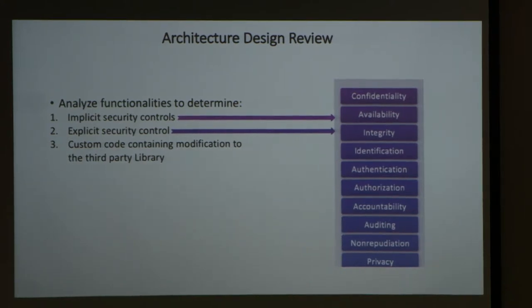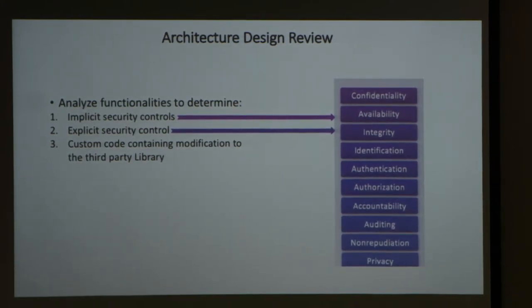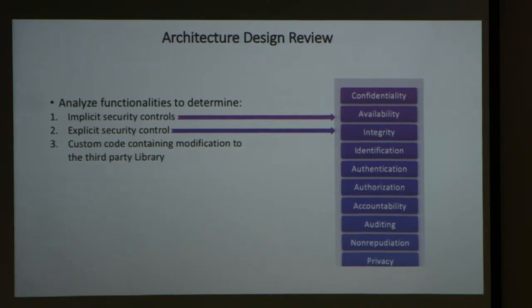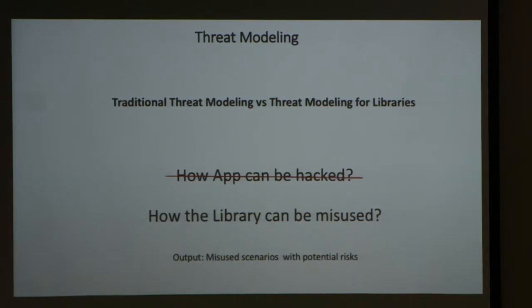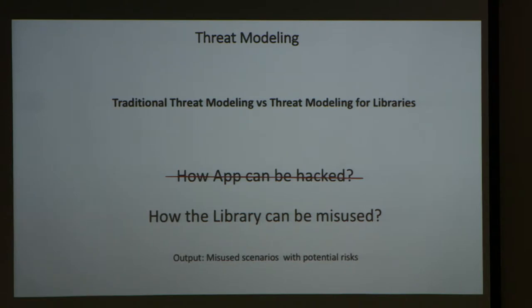We ask our developers to list implicit security controls, explicit security controls, and the code modifications they have made to third-party libraries. Once we have the list of implicit and explicit security controls and entry/exit points, the next step is threat modeling.